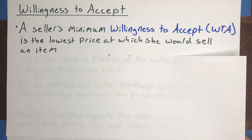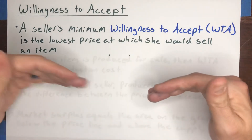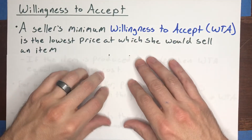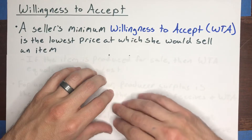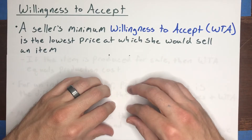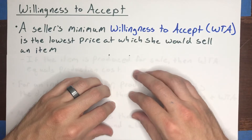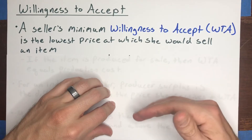Let's start by thinking about willingness to accept. A seller's minimum willingness to accept is the lowest price at which she would be willing to sell an item — just the flip side of the idea of maximum willingness to pay. You can imagine sitting a seller down with an item she might be willing to sell, and you offer her a very high price. If it is a can of Coca-Cola, maybe you offer her $10. And then you incrementally lower that price: $9, $8, $7, and so on.